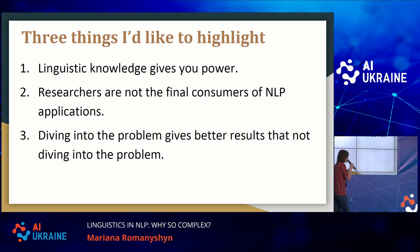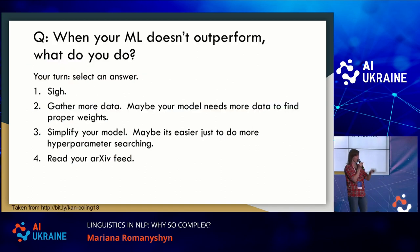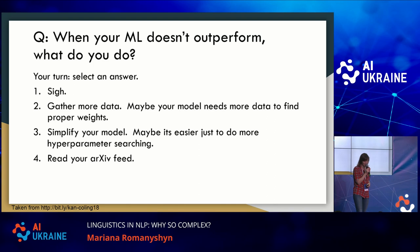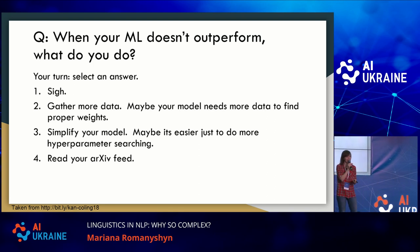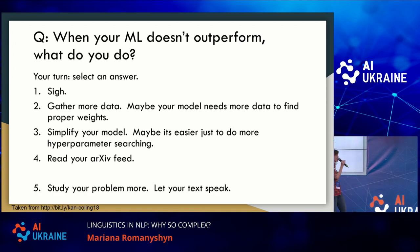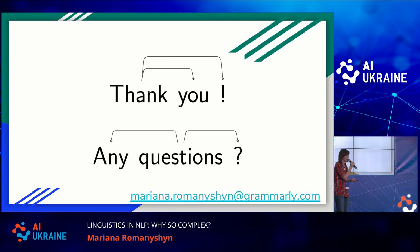And the conclusions: Number one — linguistic knowledge gives you power. Number two — researchers are not the final consumers of applications, and you have to know and think about that in your job. Number three — diving into the problem gives better results than not diving into it. I'd like to finish with a slide from Min-Yan Khan, a professor at the University of Singapore. It represents the current mindset: when your machine learning doesn't outperform, first you sigh — that's what everybody does. Then you gather more data, simplify your model, do more hyperparameter search, read the latest arXiv papers for new architectures. And number five is you actually study your problem. I would encourage you to do number five first.